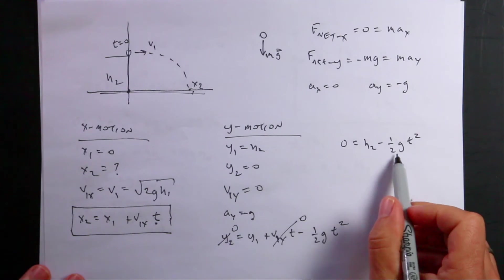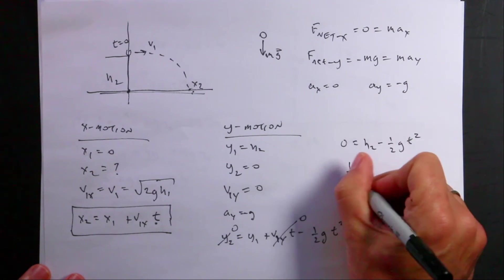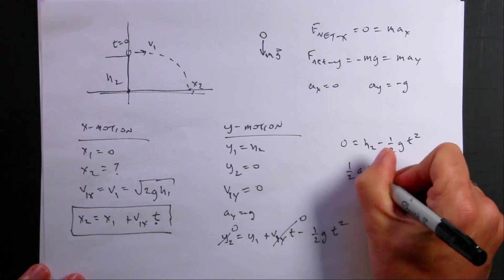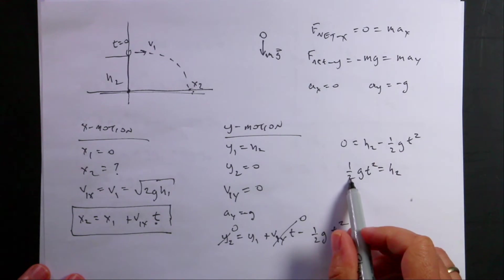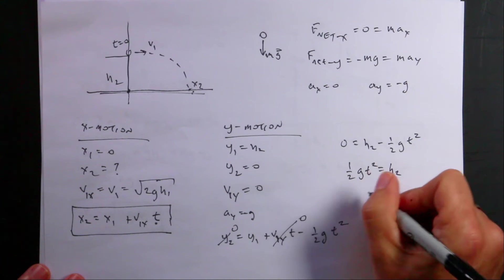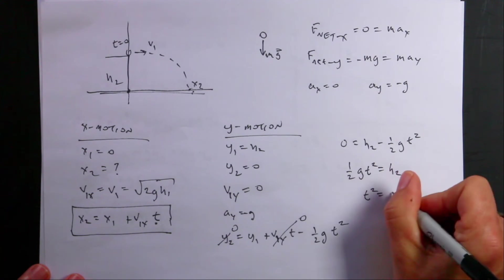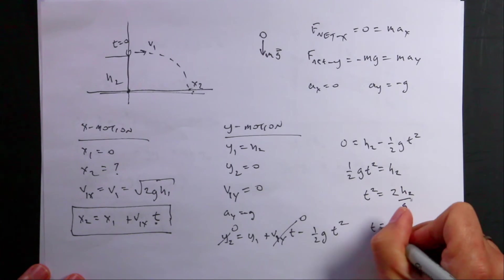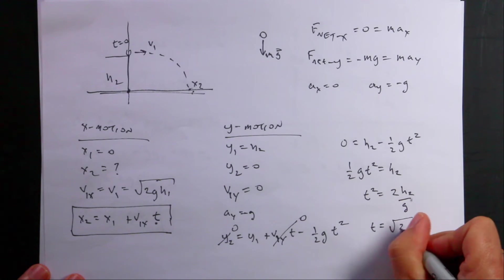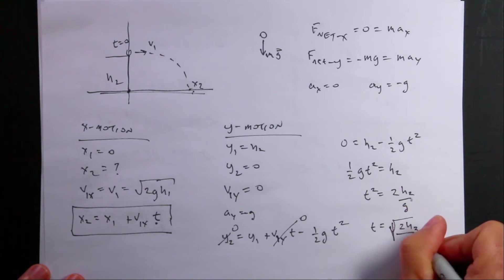And I want to solve for t. So let's add this to both sides. 1 half g t squared equals h2. Multiply both sides by 2 and divide by g. t squared equals 2 h2 over g. And then take the square root. t is equal to the square root of 2 h2 over g.